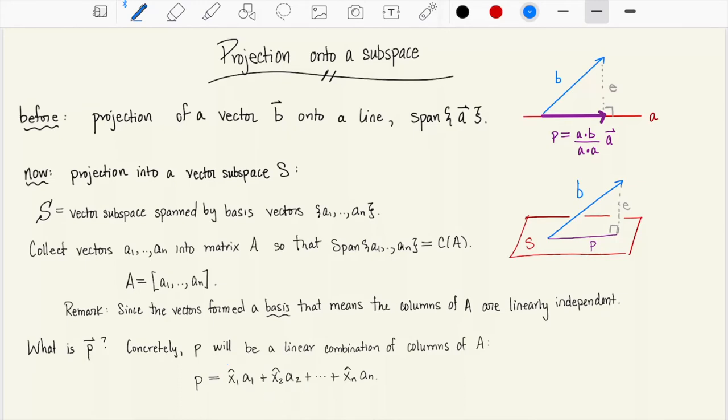Now I'm using a little bit of different notation for scalars than what I would normally write. I'm writing x1 hat and x2 hat and xn hat for the various scalars in this linear combination. This is supposed to call back to earlier notation that we used when we were solving what the projection should be when we were projecting onto just a line.